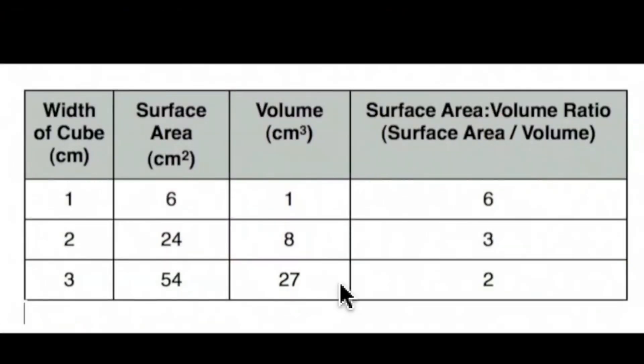As the size of the cell increases, so too does the surface area and volume. However, notice that the volume of the cell increases faster than the surface area when a cell grows, therefore decreasing its surface area to volume ratio.